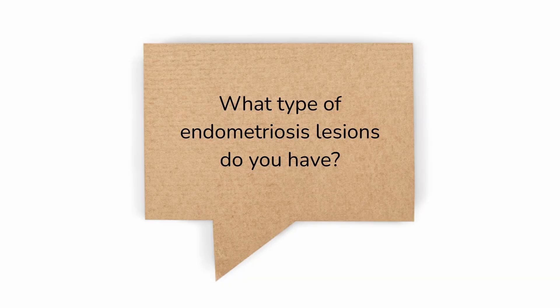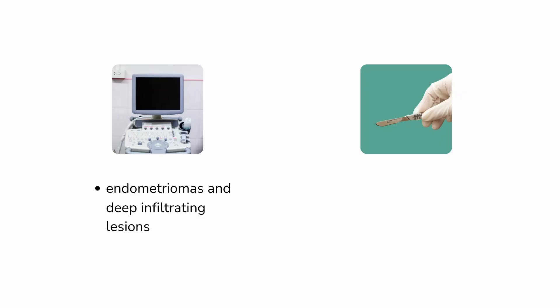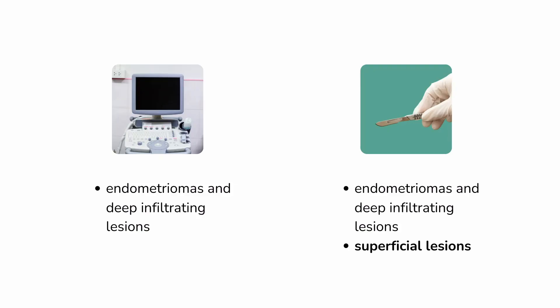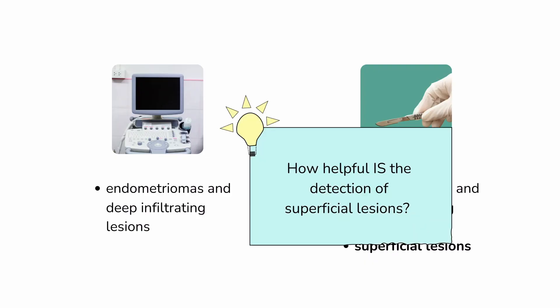There are two main ways to detect endometriosis lesions: specialized transvaginal ultrasound and surgery. There's also MRI, but that's less common. Specialized transvaginal ultrasound or MRI can really only detect endometriomas and deep infiltrating lesions, but that's okay because those are the lesions that need to be detected. Of course, sometimes ultrasound can miss those — there's always nuance and complexity with a topic like this. Surgery can detect endometriomas and deep infiltrating lesions, but it can also detect superficial lesions. In fact, surgery is the main way to detect superficial lesions. But the big question is, how helpful is the detection of those superficial lesions, since they may not be the explanation for your symptoms anyway?